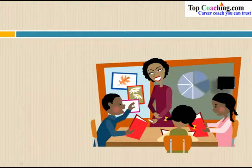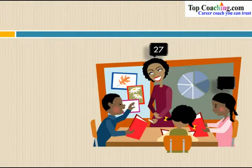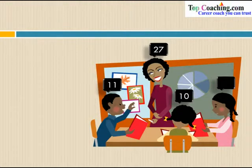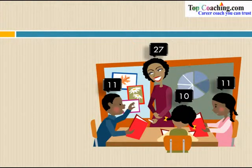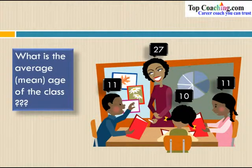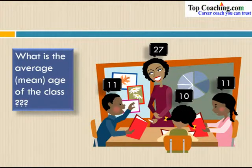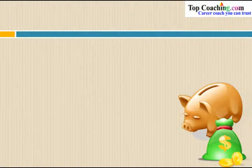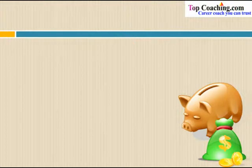Let us say that we have a class. The age of the teacher is 27 years, the age of one student is 11 years, another student is 10 years, and another student is 11 years. Now we have the ages for different members of this class — what is the average age of this class? Let's take one more example: all of us are given pocket money by our parents. We spend most of it, but some amount is saved.